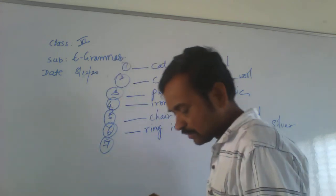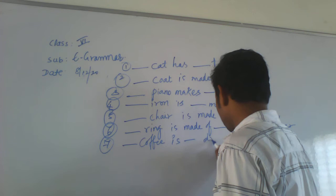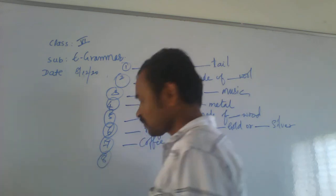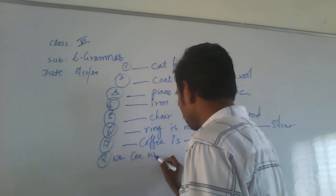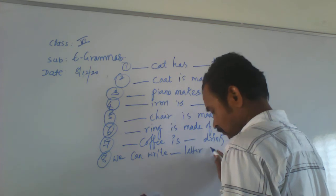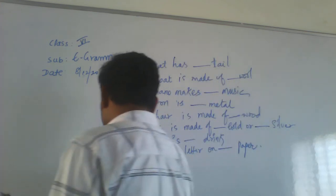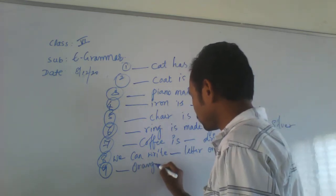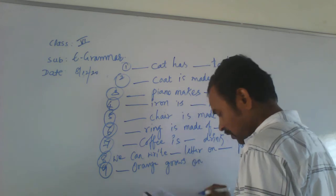The seventh example: blank copy — blank green. We can write a blank letter on blank paper. Ninth example: blank orange grows on blank tree. So there are 14 examples total, let's go through them one by one.